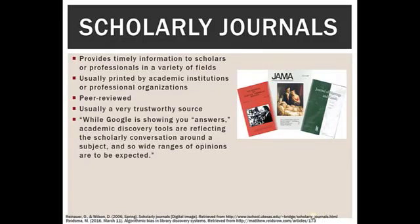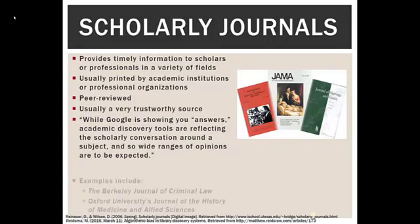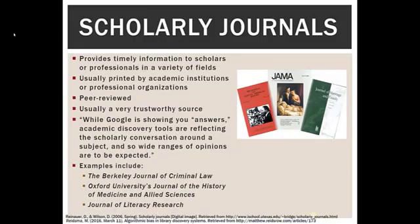While Google is showing you quote-unquote answers, academic discovery tools are reflecting the scholarly conversation around a subject, so a wide range of opinions is to be expected. Remember that these are not necessarily right or wrong — scholars have a conversation where they're trying to get at truth, and sometimes they argue quite vigorously. Part of your job as a student is to find all the different aspects of that conversation so you see the whole picture of a topic. Some examples of scholarly journals: the Berkeley Journal of Criminal Law, Oxford University's Journal of the History of Medicine and Allied Science, and the Journal of Literacy Research.